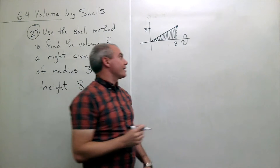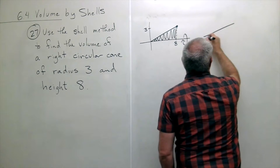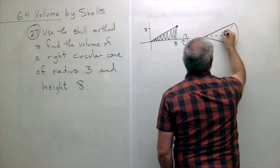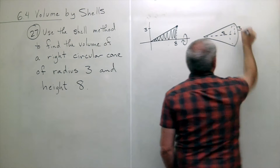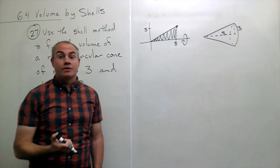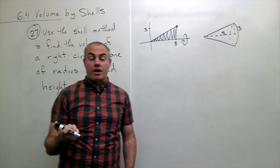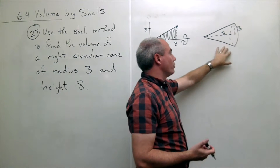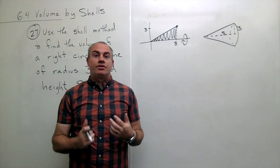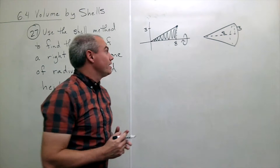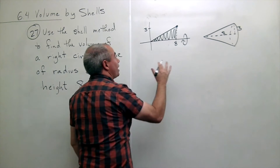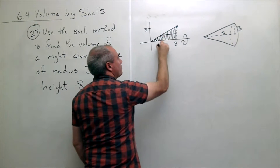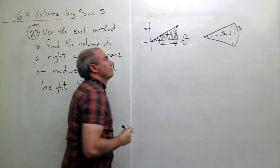When I revolve that thing around the x-axis, I get a nice cone — the height of that cone is eight and the radius is three, which is exactly what I want. So if I spin this triangle around the x-axis, I get the cone I'm looking for, and I want to use the shell method. The way I'm going to get shells is by cutting horizontal strips and spinning them around the x-axis.